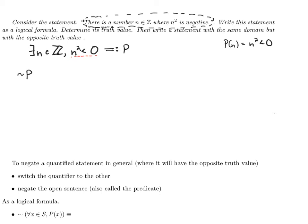The way I would reword it: all integers n are such that n squared is not negative — meaning n² is greater than or equal to zero. Remember, the negation of 'negative' doesn't mean positive; it means not negative, so it's either positive or zero. So the negation is: for all integers n, n² ≥ 0.